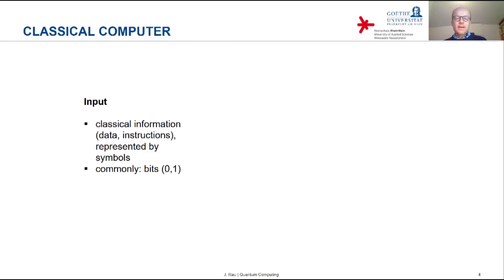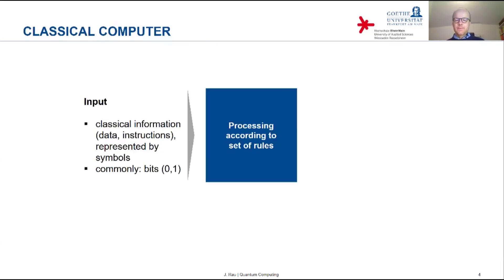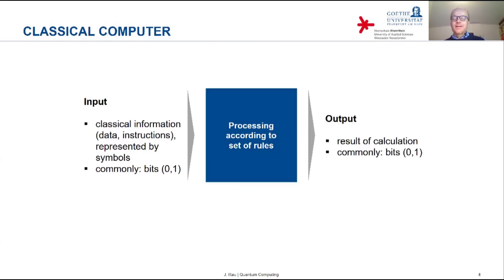Commonly one uses classical bits — zeros and ones. That's the input that goes into the machine, which processes this input according to some set of rules and then spits out an output, the result of the calculation, which is again commonly represented as a sequence of bits.